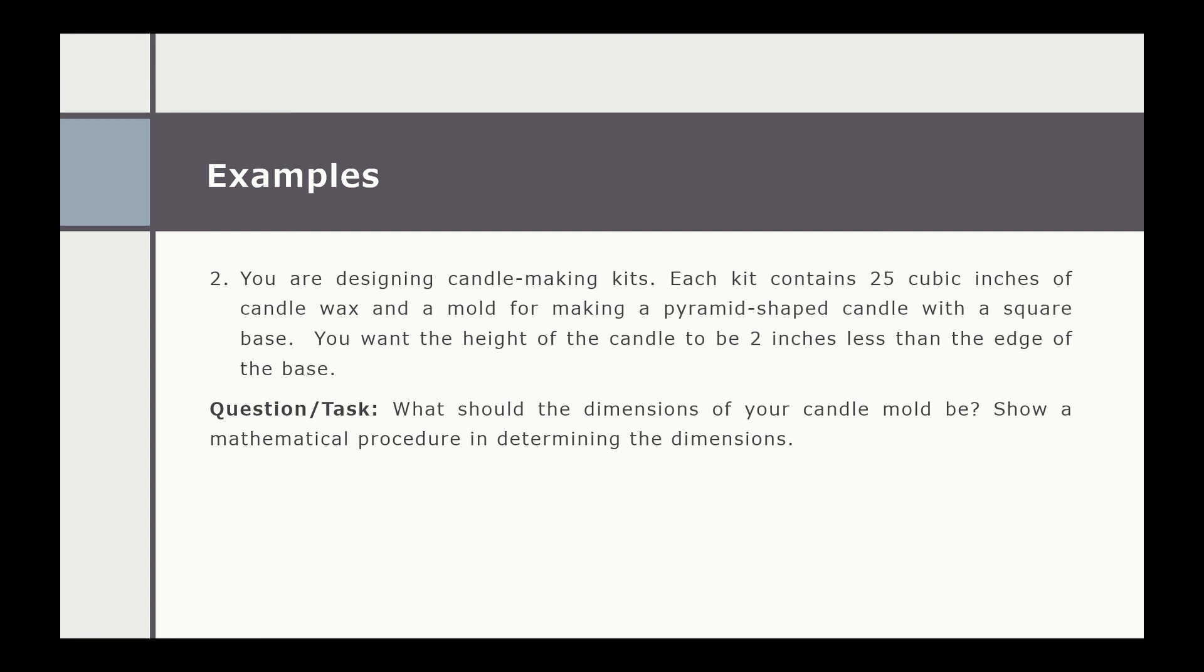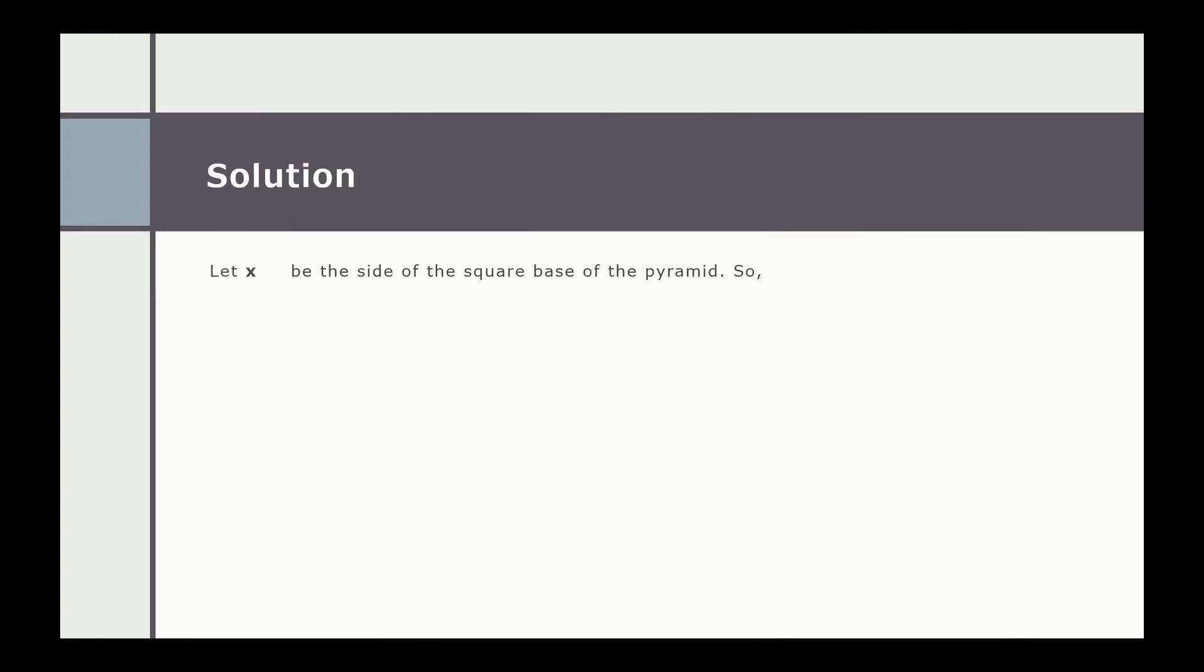The question or task would be: What should the dimensions of your candle mold be? Show a mathematical procedure in determining the dimensions. In this problem, let x be the side of the square base of the pyramid, so the area of the base B is equal to x². The height of the pyramid, as mentioned in the given word problem, should be 2 inches less than the edge of the base, so we have h which is equal to x minus 2.